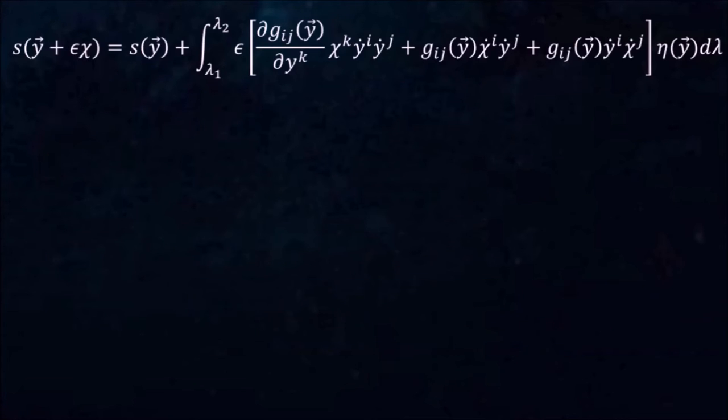Here's the same expression again. Notice that the first term in the brackets contains chi, while the other two terms contain chi-dot. We can apply partial integration to the last two terms in order to convert chi-dot into chi.